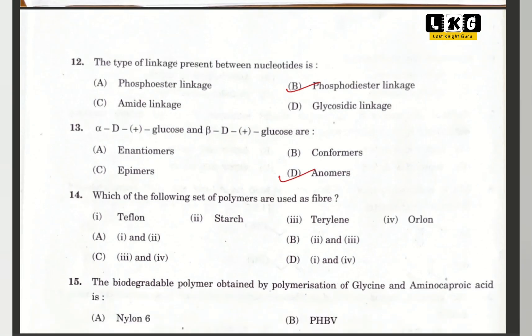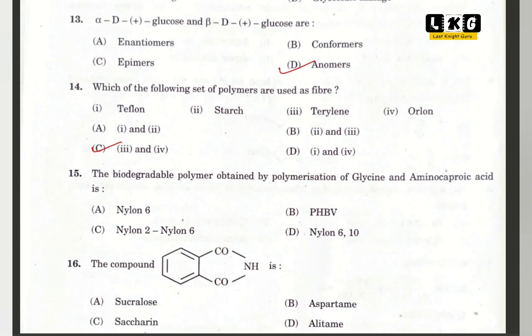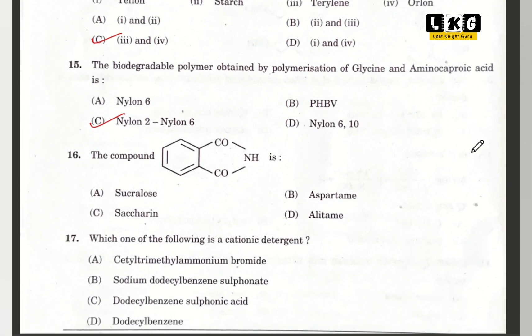Question number 14: which of the following set of polymers are used as fibers? Option C is correct — that is 3 and 4. Terylene and Orlon are fibers. Question number 15: the biodegradable polymer obtained by polymerization of glycine and amino caproic acid is option C — Nylon 2, Nylon 6. Question number 16: the compound shown is saccharine. Option C is correct.